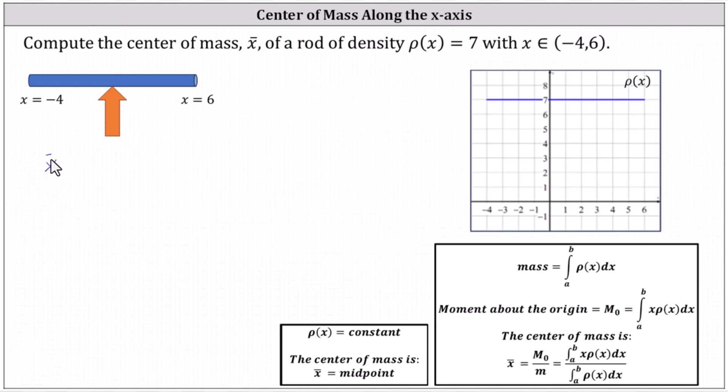The center of mass x bar is equal to the sum of negative four and six divided by two, which equals two divided by two, which equals one. The center of mass is equal to one.